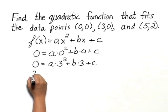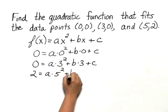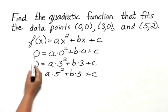And if f of 5 is 2, we have 2 equals a times 5 squared plus b times 5 plus c. And what we really have now is three equations in three unknowns that we can solve.